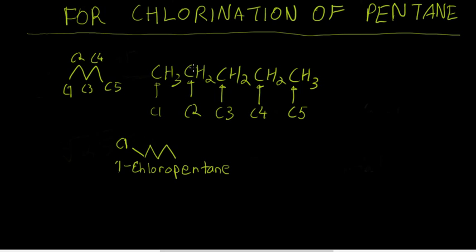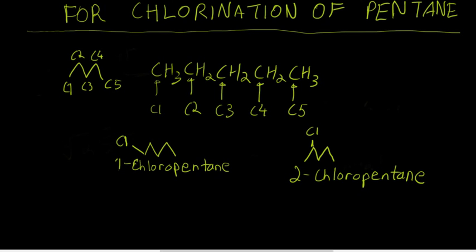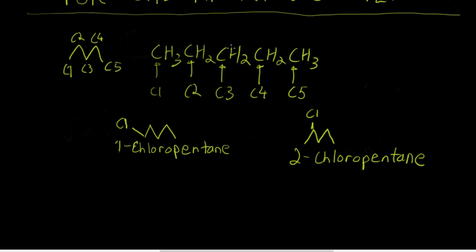Alternatively, we could get chlorination at C2, but that would be the same as getting chlorination at C4. So chlorination at C2 would give you 2-chloropentane, and chlorination at C3 would give you 3-chloropentane.